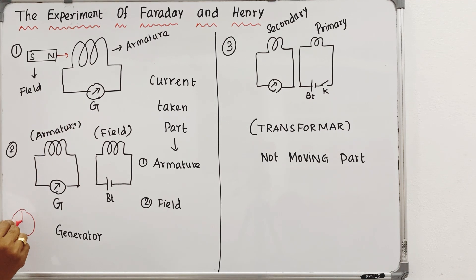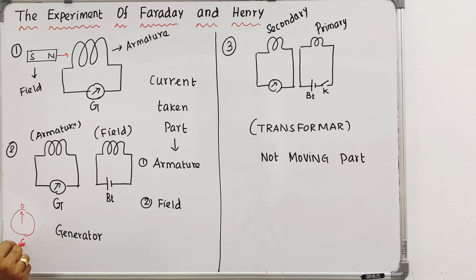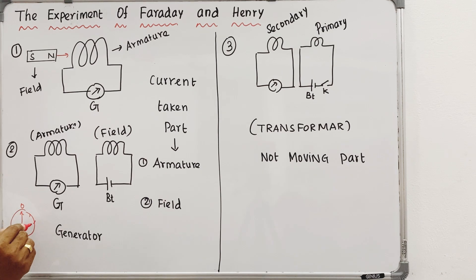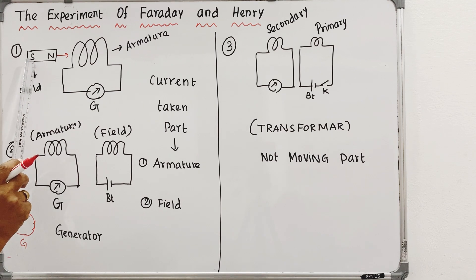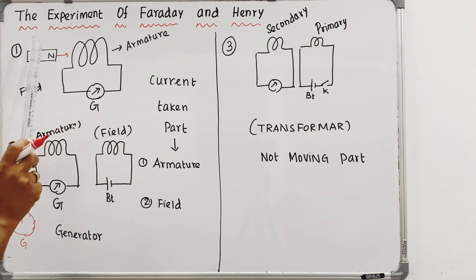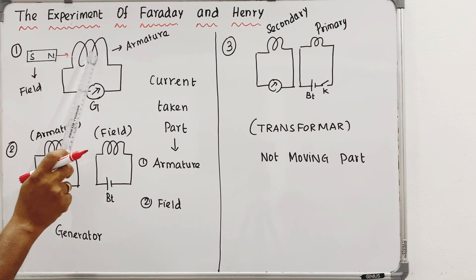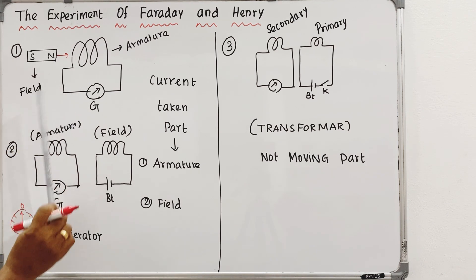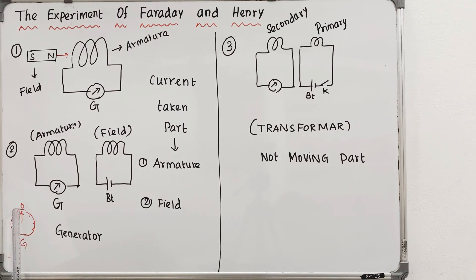There is a zero reading on the galvanometer. Now the magnet is inserted. The galvanometer deflection shows a deflection.